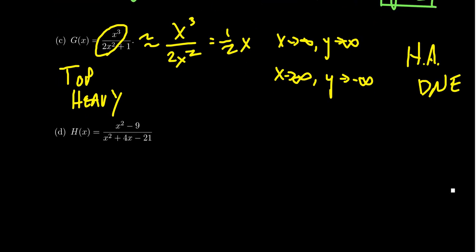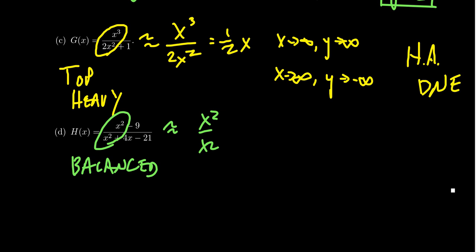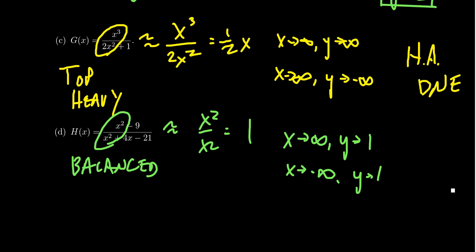Let's look at one more example. This one is balanced again. As x goes towards infinity, this will be approximately x squared over x squared, which is just 1. So as x approaches infinity, y approaches 1, and as x approaches negative infinity, y approaches 1 again. There's a horizontal asymptote at the line y equals 1 for this example, because it was a balanced rational function.